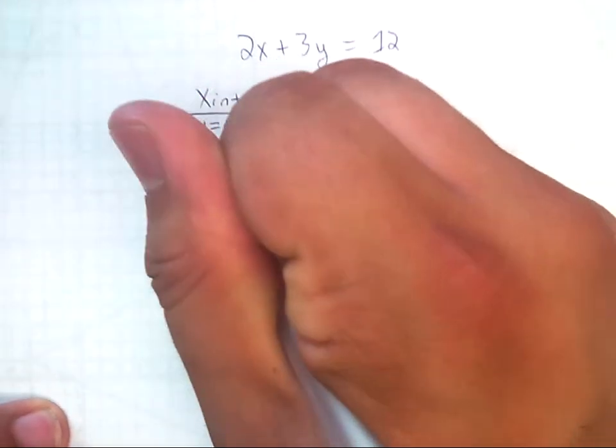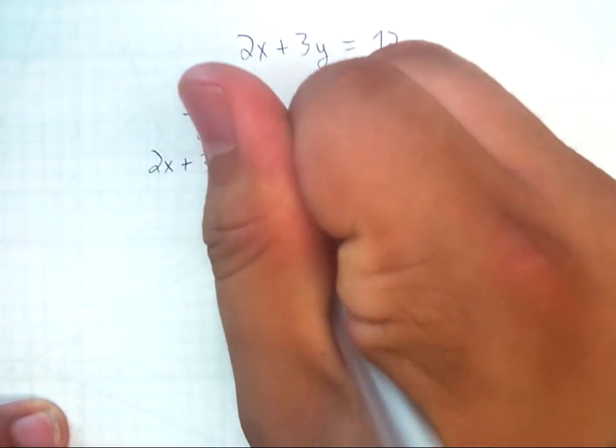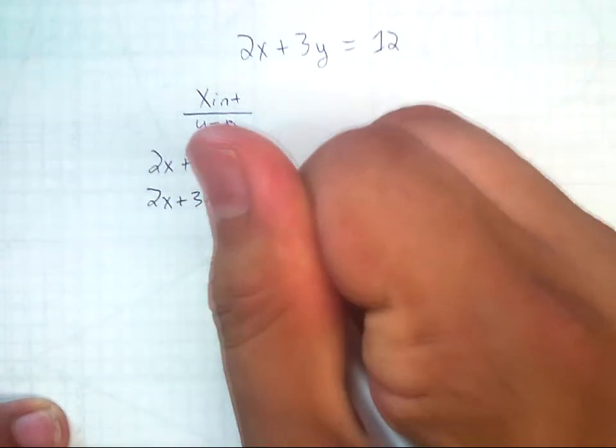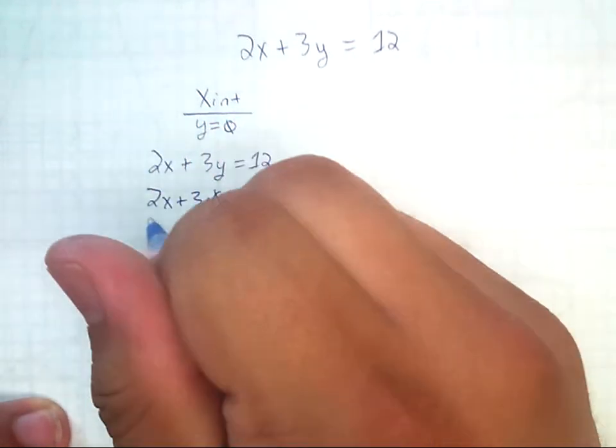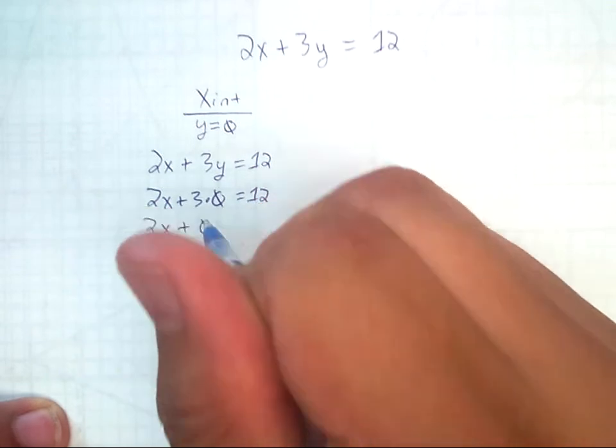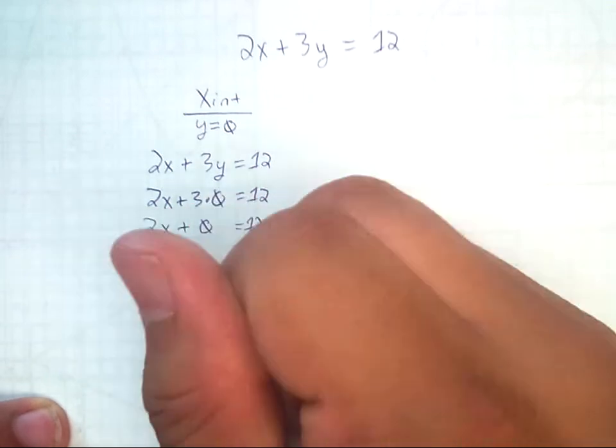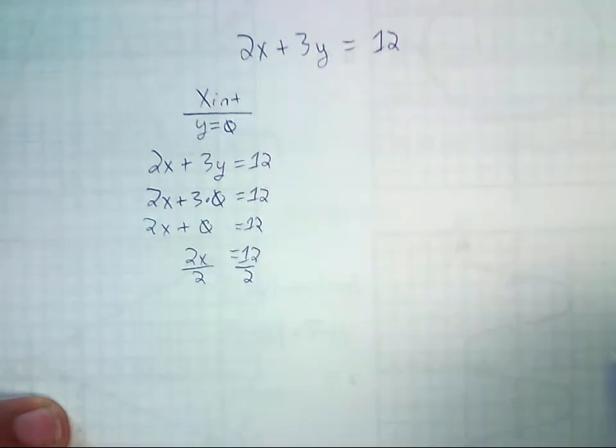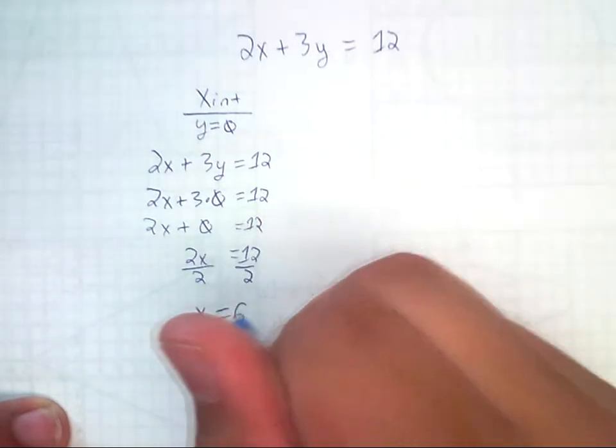So here's what happens. 2x plus 3y equals 12. Well, now I'm going to replace y with zero. And if you watch, it drops out. And the only variable we're left with is x. And in this case, divide by two, the x-intercept for this problem was six.